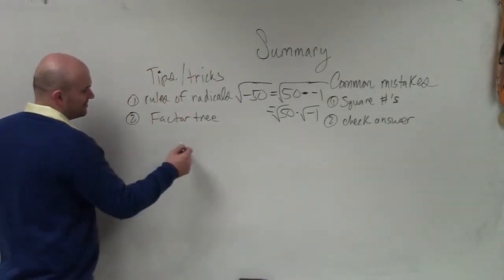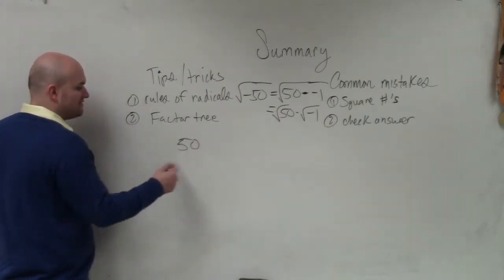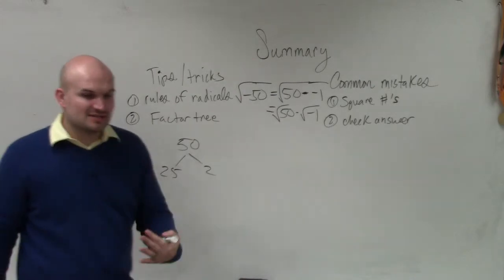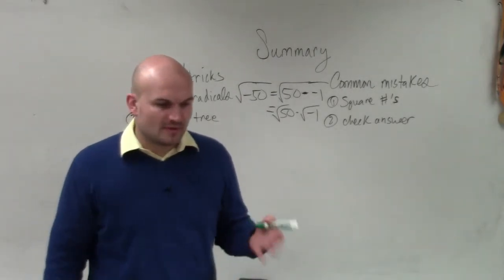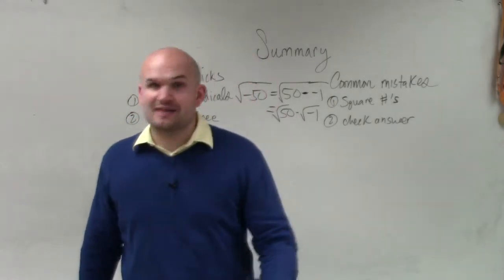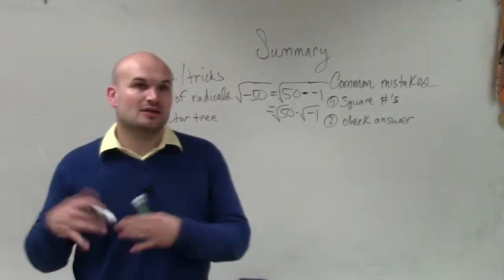The next thing is if you're having trouble factoring, you can't factor 50, always break it down. I always like breaking it down by dividing by numbers that are simple, 2 and 3. And always divide by prime numbers. So 2, 3, 5, 7, 11, 13.